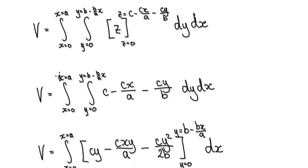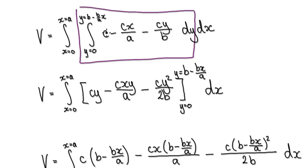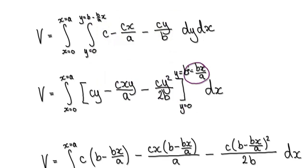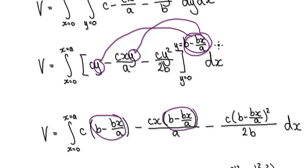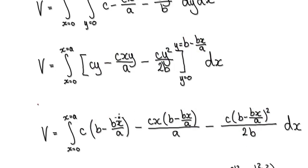Now integrate with respect to y. Integrating cy gives cy, and the other term gives its corresponding expression. We evaluate from zero to the diagonal line b minus (b/a)x. Substituting the diagonal line into each term gives us the squared terms, with constants c and 2b appearing. That takes us to the next expression.